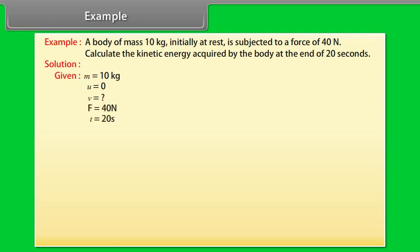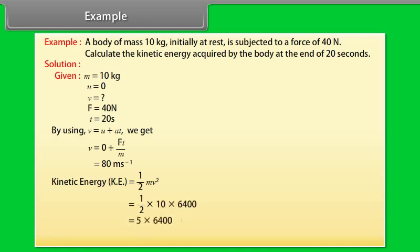By using V is equal to U plus 80, we get V is equal to 80 m per second. Kinetic energy is equal to half mv square. On calculating, we get kinetic energy is equal to 32,000 joules.